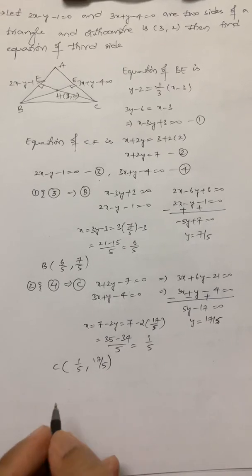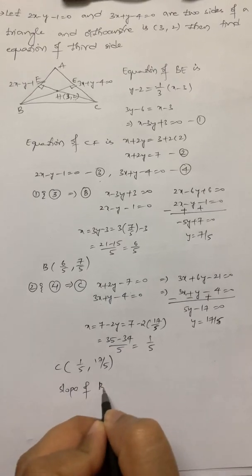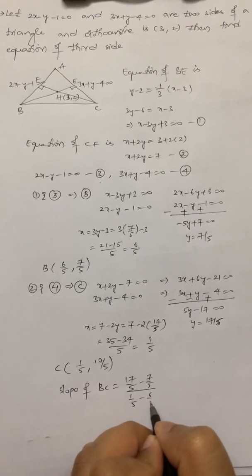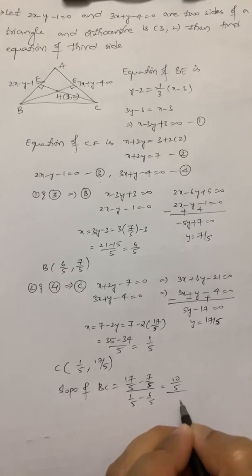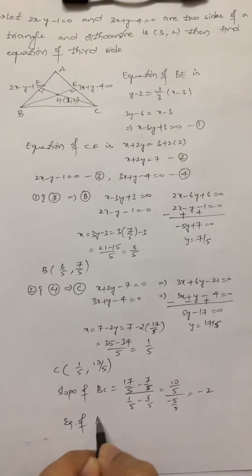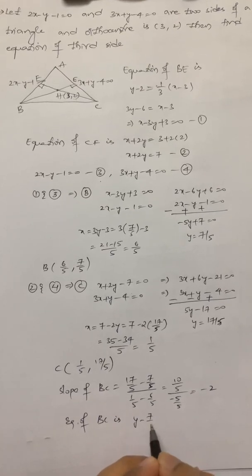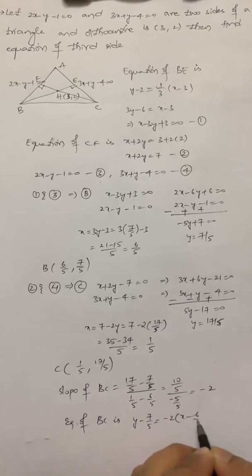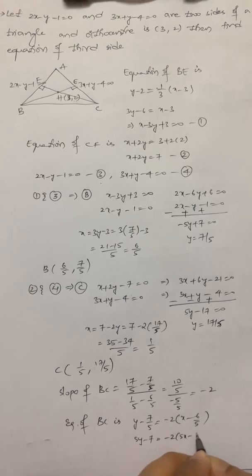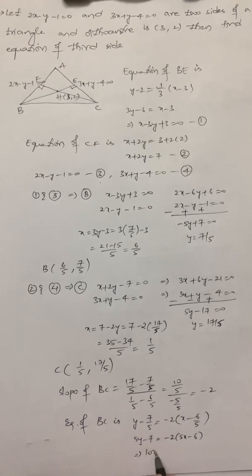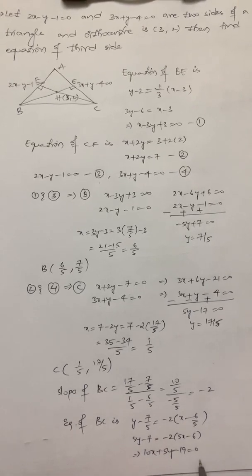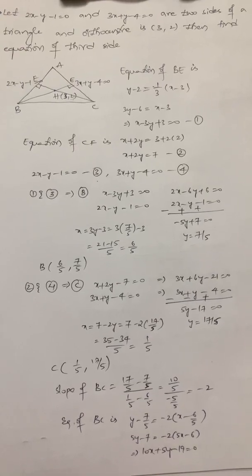Now I can find the equation of BC. The slope of BC equals (17/5 minus 7/5) divided by (1/5 minus 6/5), which equals (10/5) divided by (minus 5/5), which equals minus 2. The equation of BC: y minus 7/5 equals minus 2 times (x minus 6/5). Taking LCM, 5y minus 7 equals minus 2 times (5x minus 6). Simplifying, 10x plus 5y minus 19 equal to 0.